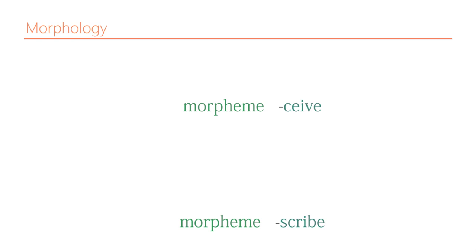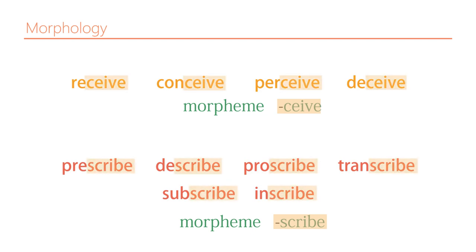These are still morphemes — the question is whether we count them. In this case, we know it means something, it appears in different words, the meaning depends on the morphological context, and the exact meaning can be found through etymological history.